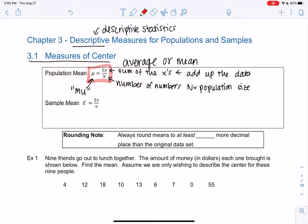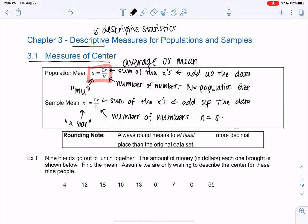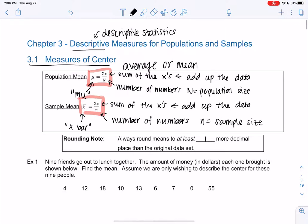And then for samples, we're going to use x with a bar over it, so x bar. Again, we're going to find the sum of the x's, because we're going to add up the data. X's are just data values. Add up the data, then we'll divide by the number of numbers, which we're going to use a little n so we can differentiate the sample versus population. Little n will be sample size. The concept is the same. We're just going to use different symbols, which will be really important later on. And then the rule for rounding is that we always use at least one more decimal place than the original data set.